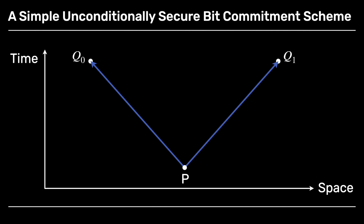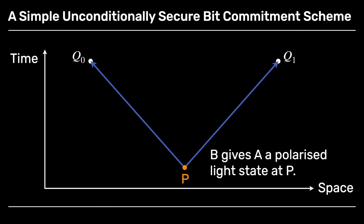So we're going to start at point P. Remember, space goes horizontally — we simplify by thinking of space as one-dimensional here — and time goes vertically up the diagram. At point P, Bob gives Alice a polarised light state. He knows what polarisation it was, but she doesn't. We're going to focus on just a single bit, a 0 or a 1. Obviously you can do this many times if you want to commit to many bits and so commit to a message, but let's focus on the single-bit case here.